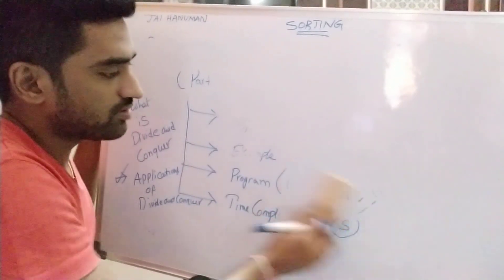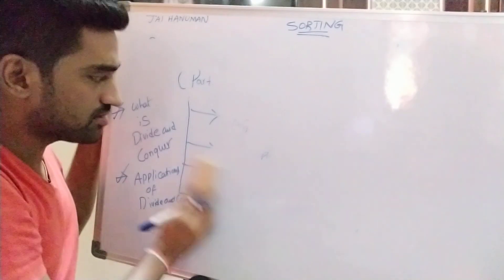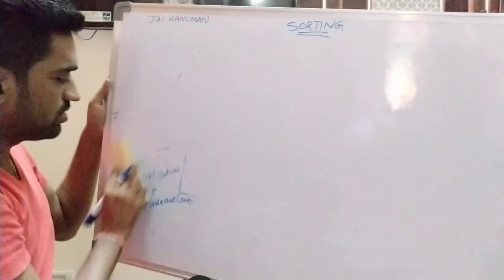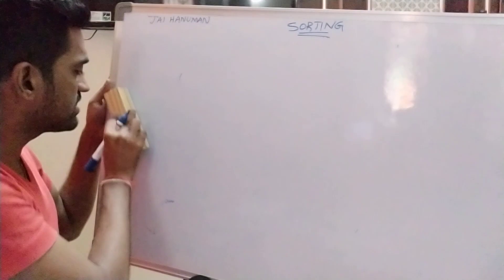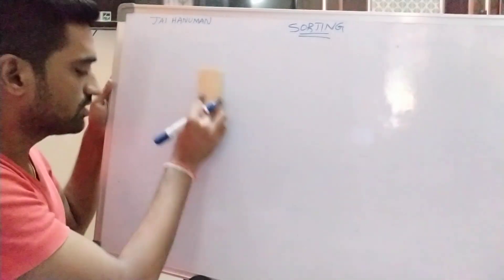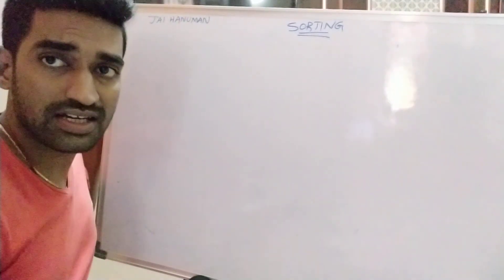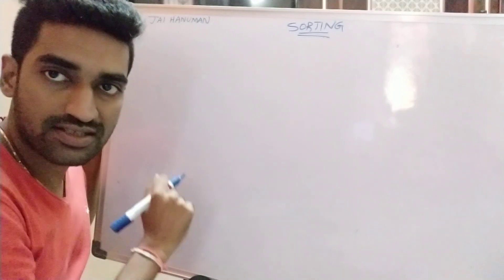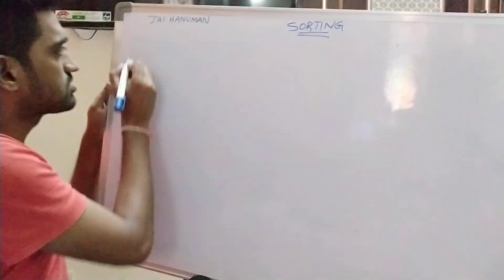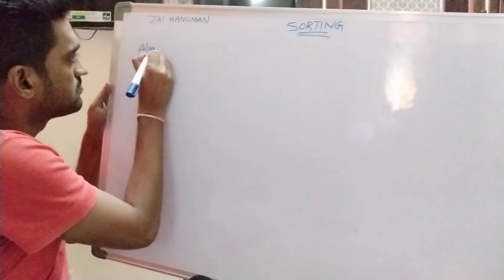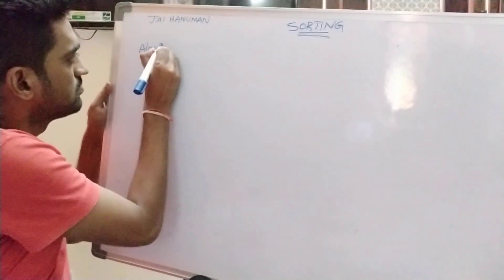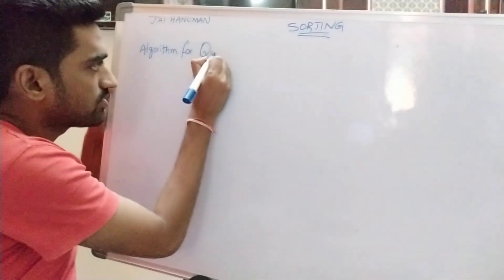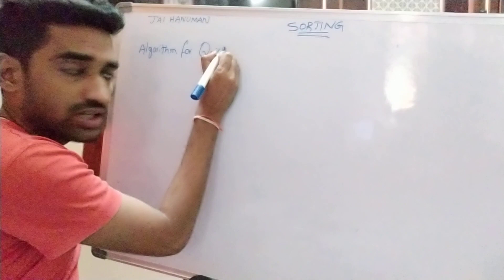An algorithm is a step-by-step solution for a given problem. For each and every algorithm we consider four major elements: input, output, data structure, and steps. Now I am writing the algorithm for quicksort.